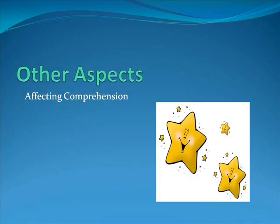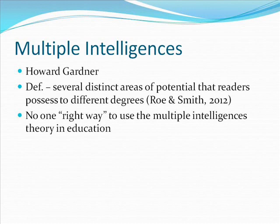Other aspects also affect comprehension. Multiple intelligences theory was developed by Howard Gardner, a professor at Harvard University. Rowan Smith defined multiple intelligences as it relates to reading as several distinct areas of potential that readers possess to different degrees. However, multiple intelligences is not just a reading theory or process. All of us have all of the intelligences to some degree, but we have strength in one to several of them. Gardner states that there is no one right way to use the multiple intelligences theory in education — the intelligences need to be incorporated appropriately. For example, playing music while students work on something is not using the musical intelligence.